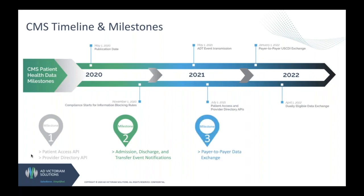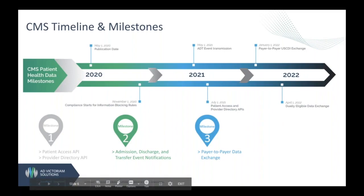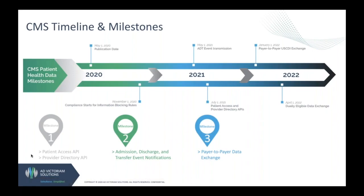Milestone 3 is designed to enable core data set information — things like demographics, vitals, notes, goals, medications, and more — to be shared amongst payers if a patient switches from one payer to another. The goal of this milestone is to allow the new providers to access information so that they can make better-informed decisions for care.